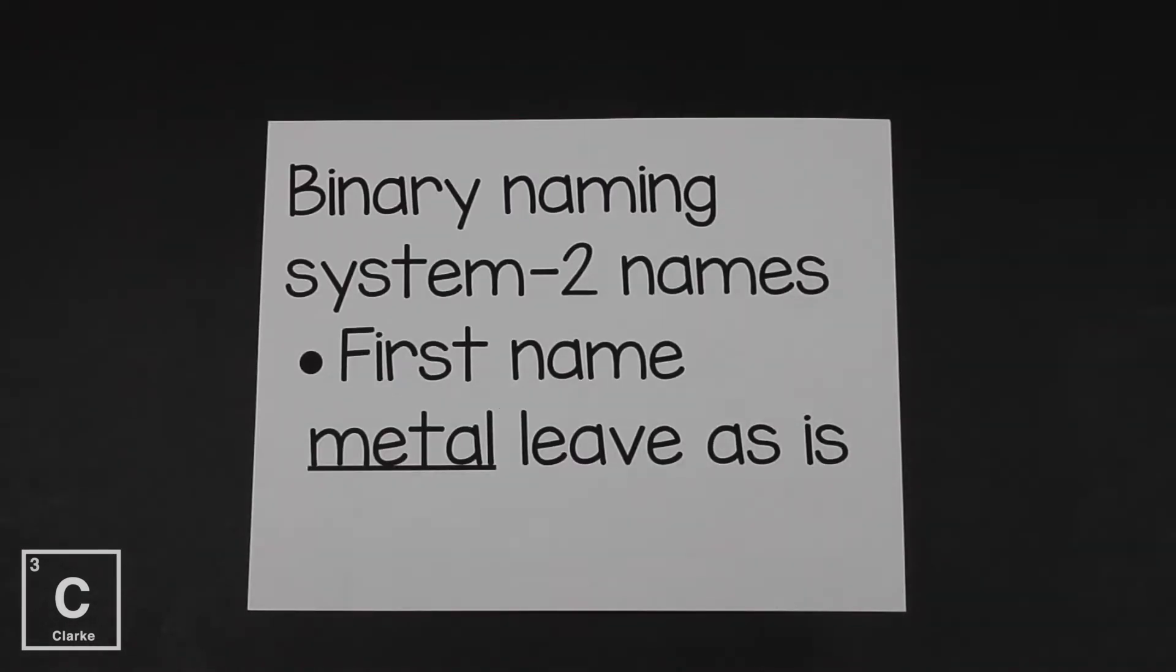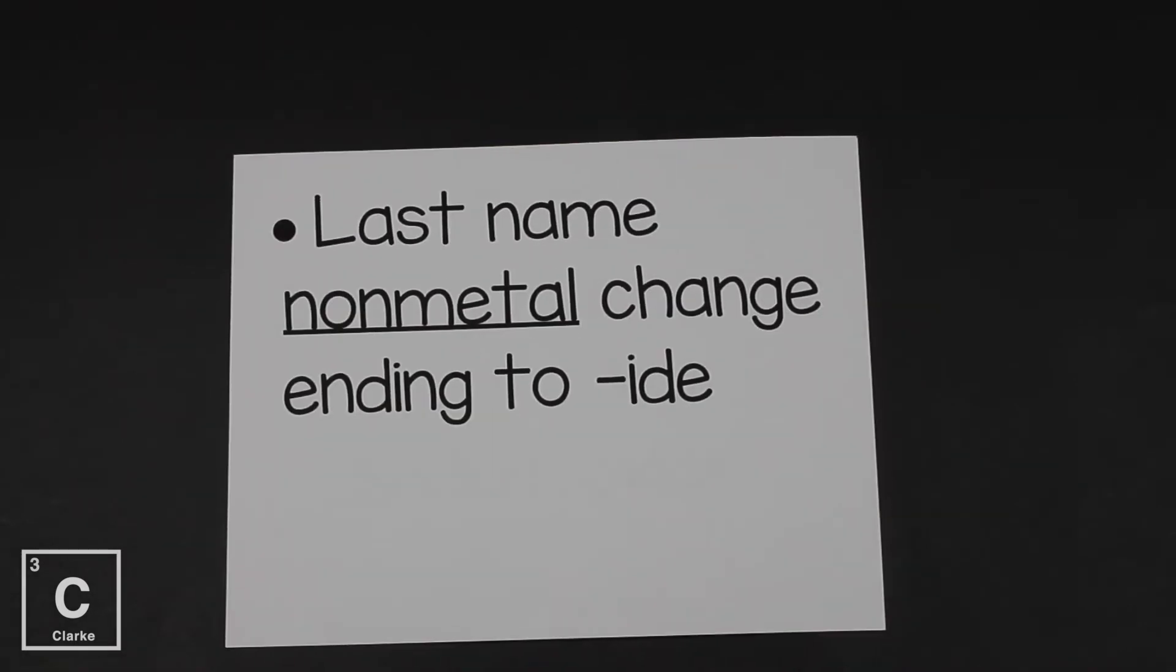We use a binary naming system when we're naming chemical compounds. Binary. That prefix bi means two. Nary means name. So this is a naming system that uses two names. The first name, the metal, we're always going to leave that as is. The last name, that's the non-metal, we're always going to change that ending to an IDE. So if we have fluorine, we would have fluoride.